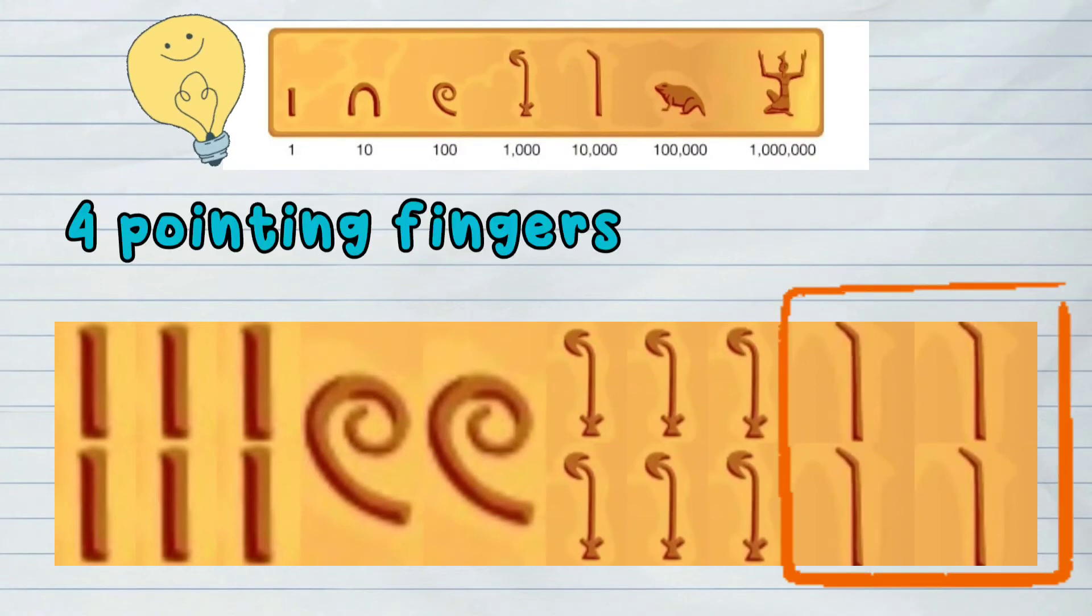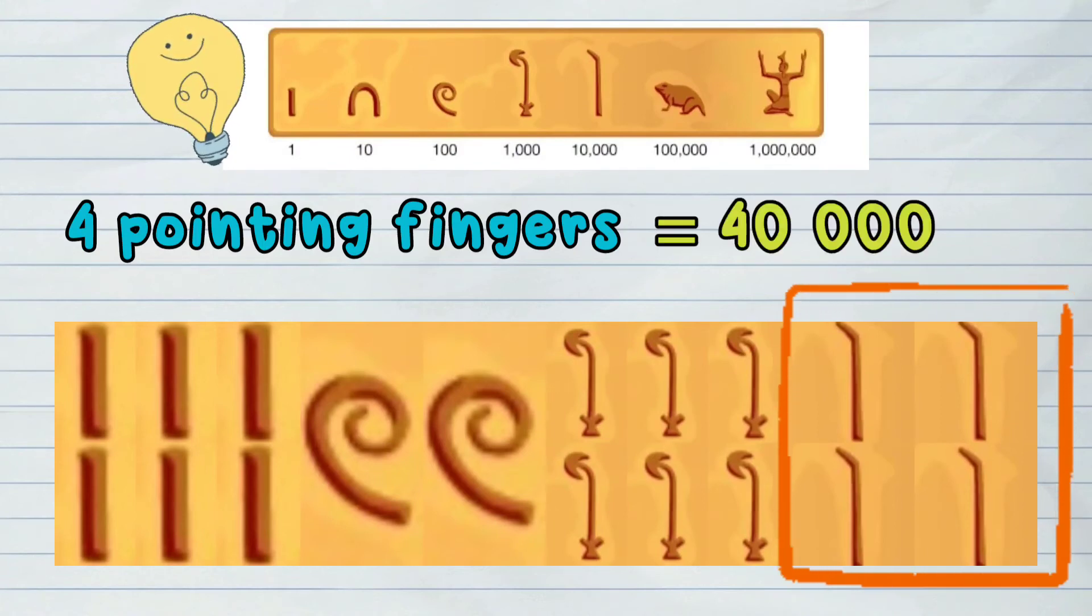And lastly, the 4 pointing fingers, which is 10,000 each. So this is equal to 40,000.